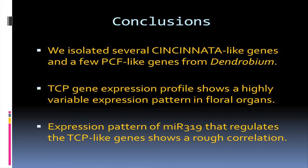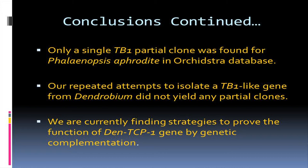In conclusion, we were able to isolate several Cincinnati-like genes as well as a few PCF genes from our dendrobium flower. Our expression profile shows highly variable expression in the different organs of the plant. The expression pattern of MIR319 correlates with the expression of TCP genes. There was only one TB1 partial clone found in all the orchid databases online, and that was just for one species out of 23 different species in these databases. Even after repeated attempts to isolate a TB1 gene, we were not successful, which leads us to new questions — maybe there isn't a TB1 gene. We are currently trying to find strategies to prove the function of the TCP genes we were able to find by genetic complementation.